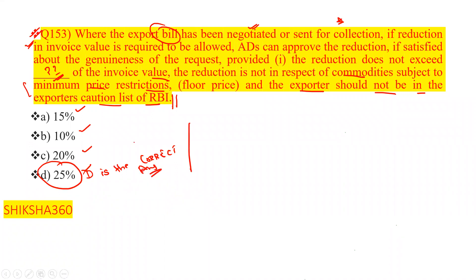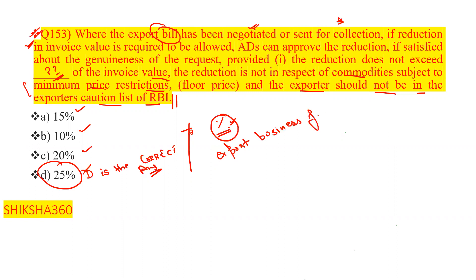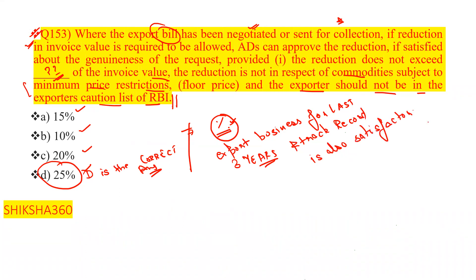There is one more condition: the reduction can be allowed without any percentage restriction in the case of an exporter having export business for the last three years and whose track record is satisfactory. Please remember all these conditions, as they are very important for the examination.